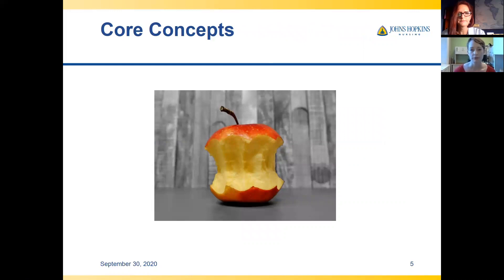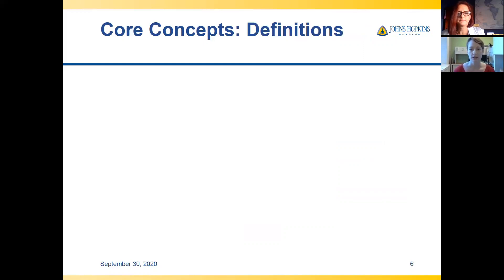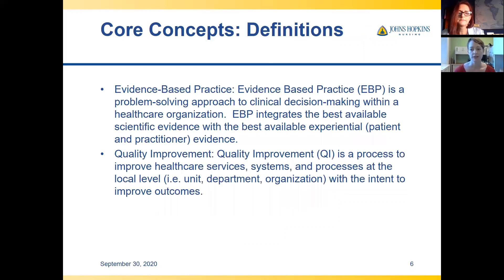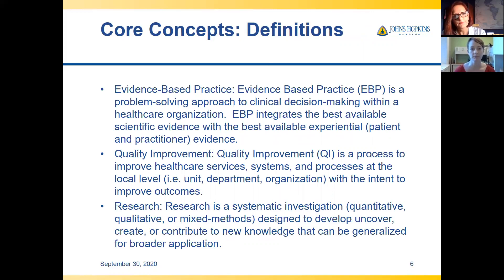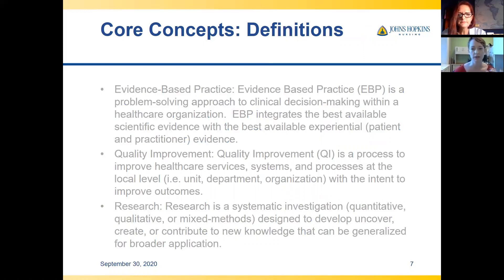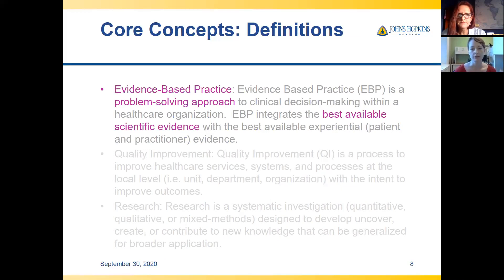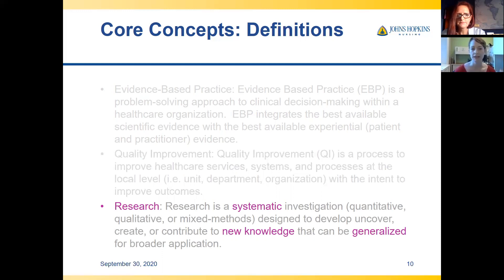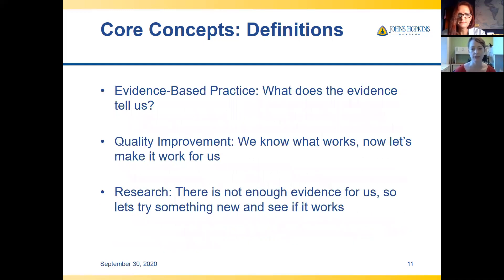These definitions are taken from the Johns Hopkins evidence-based practice model and guidelines book. Evidence-based practice is a problem-solving approach looking at the best available evidence — what already exists and what's the best of the best. Quality improvement is really a local process happening on your unit or in your department, focused on improving outcomes or processes. And research is very systematic — you make a plan and follow it — with the goal of creating new knowledge that can be generalized to a bigger population.